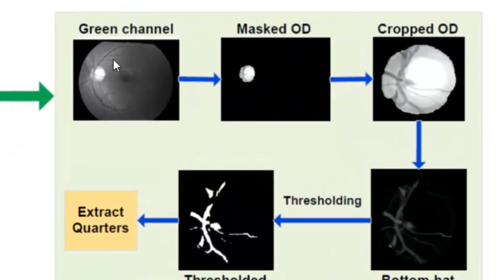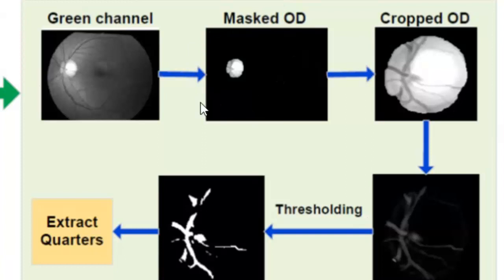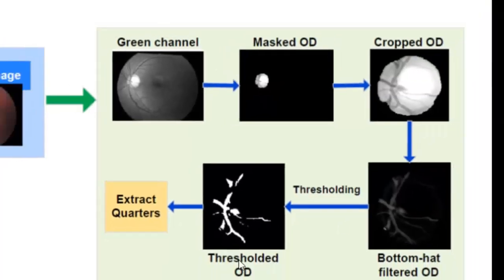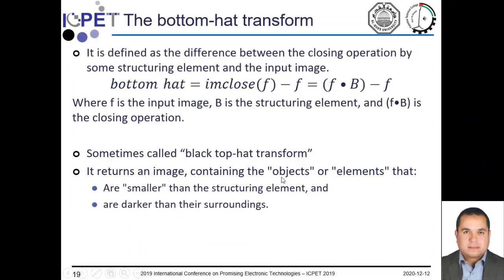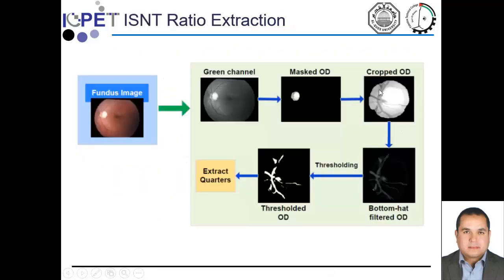These are the steps to extract the ISNT ratio. First, we take the green channel and determine the optic disc, which is the region of interest, using the previously described optic disc extraction method. After that, we use a bottom-hat transform to extract the dark areas from the cropped optic disc, then threshold the result to extract vessels. The bottom-hat transform returns an image containing elements that are smaller than the structuring element and darker than their surroundings. As we can see, this is how we extracted the blood vessels using this method.